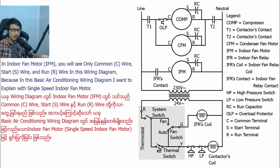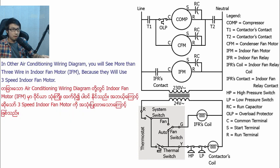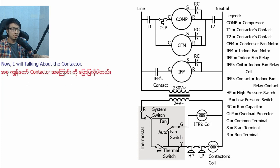In the indoor fan motor, you will see only common C wire, start S wire, and run R wire in this wiring diagram, because in this basic air conditioning wiring diagram I want to explain with a single-speed indoor fan motor. In other air conditioning wiring diagrams, you will see more than 3 wires in the indoor fan motor, because they use a 3-speed indoor fan motor.